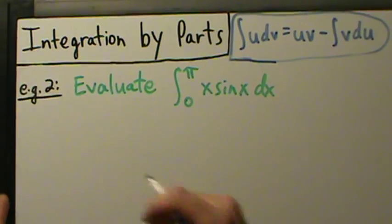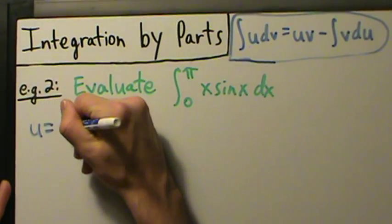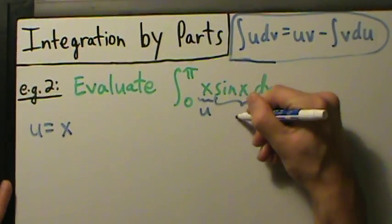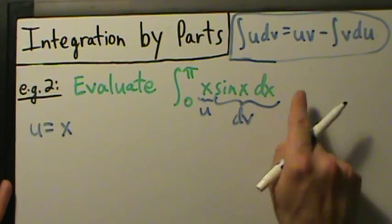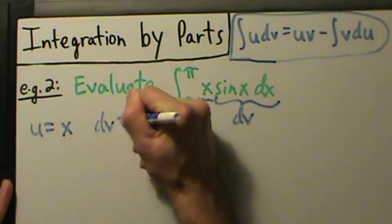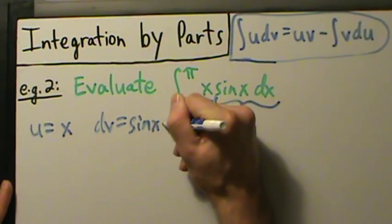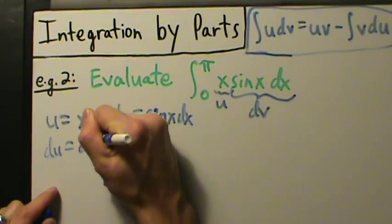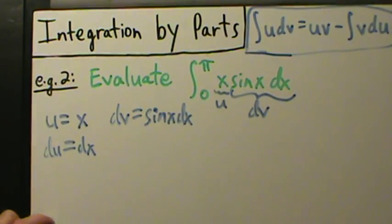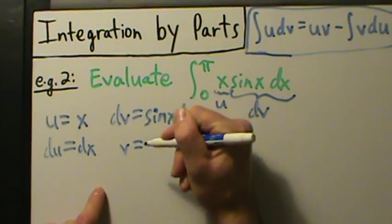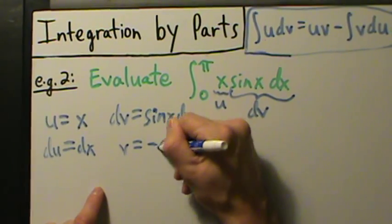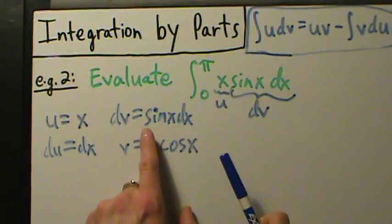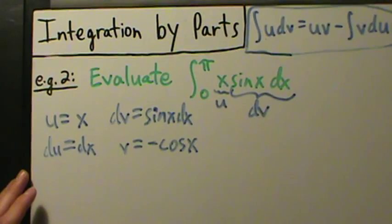So we say u equals x. Once we choose u, then dv is automatically everything else including the dx. So dv has to be sine of x dx. If u is x, then du is dx. And if dv is sine of x dx, then v — we integrate that — giving us negative cosine of x. Again, no arbitrary constant, even though we are integrating, and that was explained in a previous video.